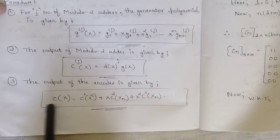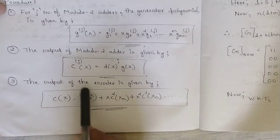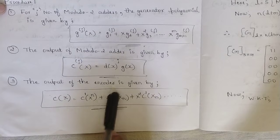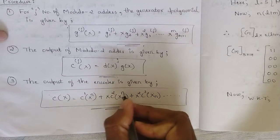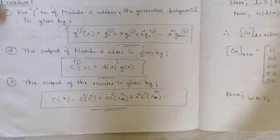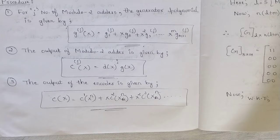The final output of the convolutional encoder in the frequency domain is given by c of x, which equals c power 1 of x to the power n, plus x times c squared of x to the power n, plus x squared times c cubed of x to the power n, and so on. These are the general output equations. The concepts discussed here will be analyzed and applied to problems in upcoming videos, showing how they should be approached and how they would be asked in exams. That's all for this video.